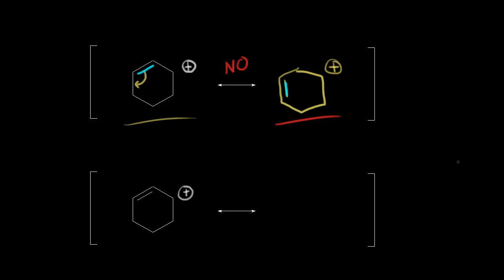Why is this resonance structure not possible? Let's draw in the hydrogens on the carbons and it'll be much more obvious. This carbon right here has one hydrogen, same with this carbon, and this carbon right here has two hydrogens, and the carbon with a plus one formal charge must have one hydrogen. Now let's focus on this carbon marked in red — how many bonds are there to that carbon? One, two, three, four, and five. That's five bonds to a carbon.